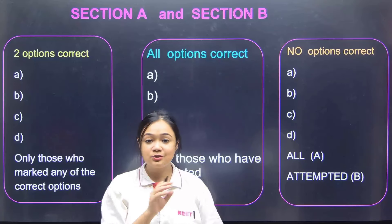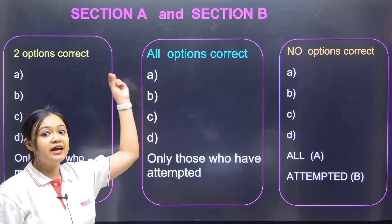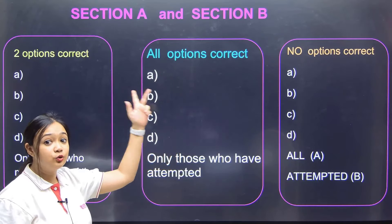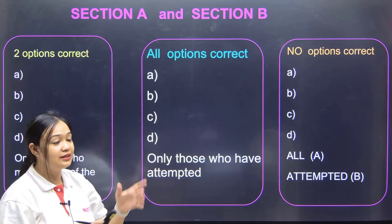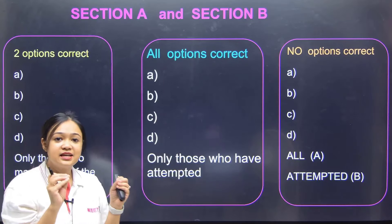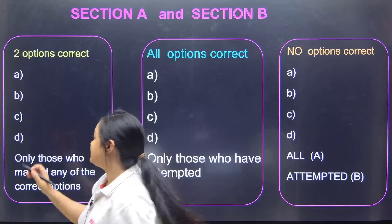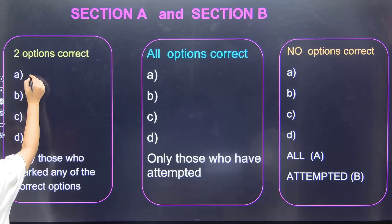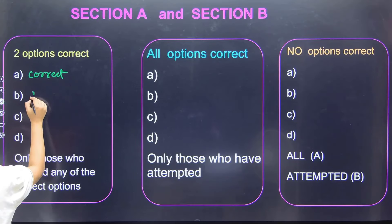Let's quickly move to our marking schemes. Section A and Section B mein alag-alag hoga, but yeh doh questions ka jo pattern hai, woh Section A and Section B mein same hoga. Let me tell you the first one. Agar NTA ne aisa ek question bana diya jahaan pe doh option correct hai — matlab yeh option number one bhi correct hai, A bhi correct hai and B bhi correct hai.